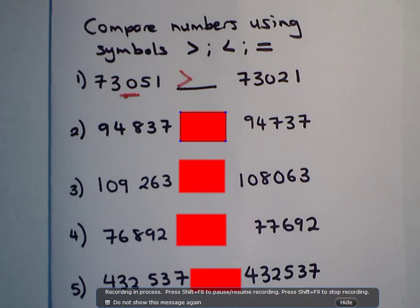Right? So, 94,837 is greater than 94,737. Next. 109,263 is greater than 108,063.